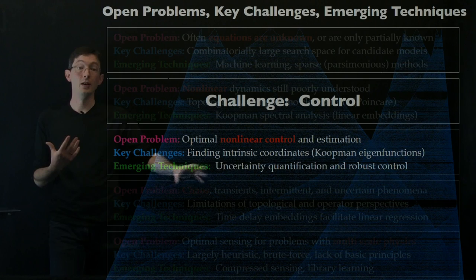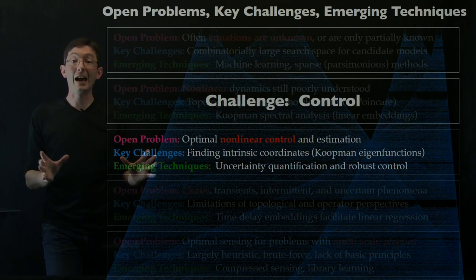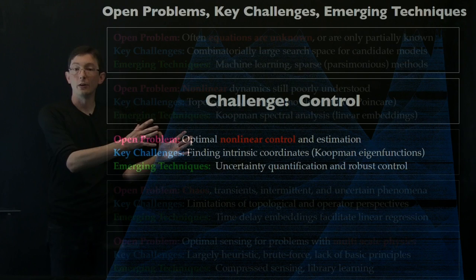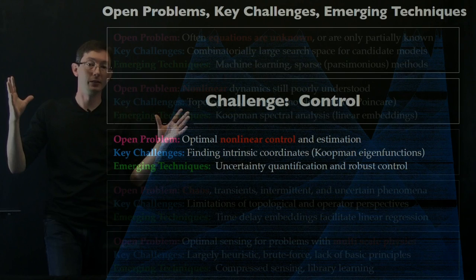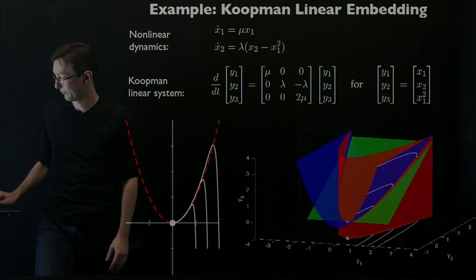I want to point out this is a vast and rapidly growing field. I'm going to give you a little window into what we're doing in my group and with my collaborators on nonlinear control and estimation with Koopman. But there are lots of teams across the world that are doing this, so it's a huge field. Very important because there's so much potential once you find these coordinates of doing optimal control with simple techniques.